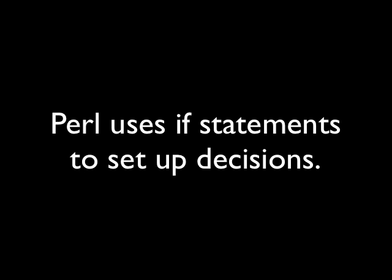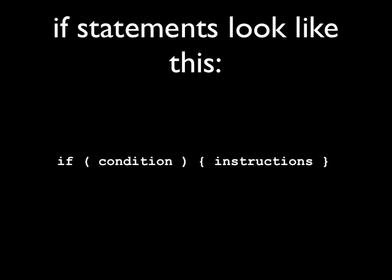Perl uses what's called if statements to set up decisions. And if statements look like this. If, and then in parentheses we have some sort of condition or comparison, and then after the close parentheses we have these curly braces that enclose a set of instructions that are followed if the condition is met. So how do we set up these conditions?